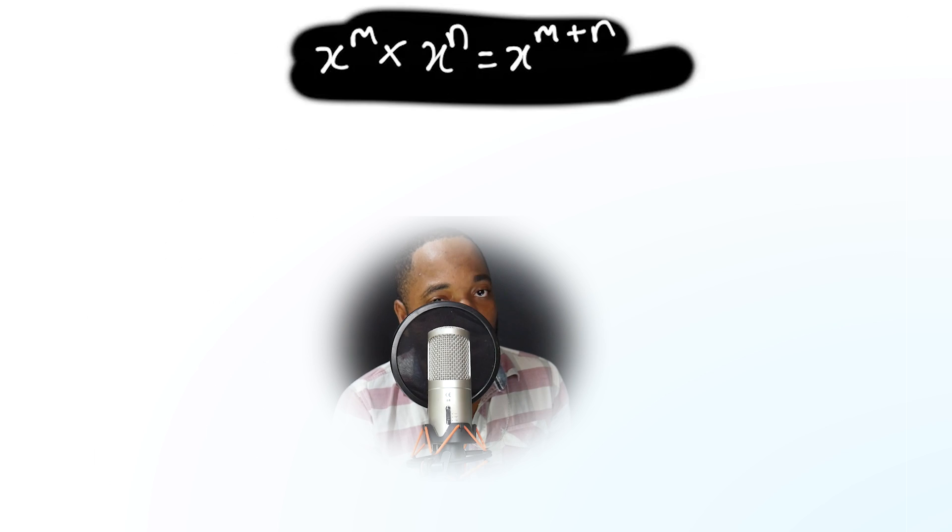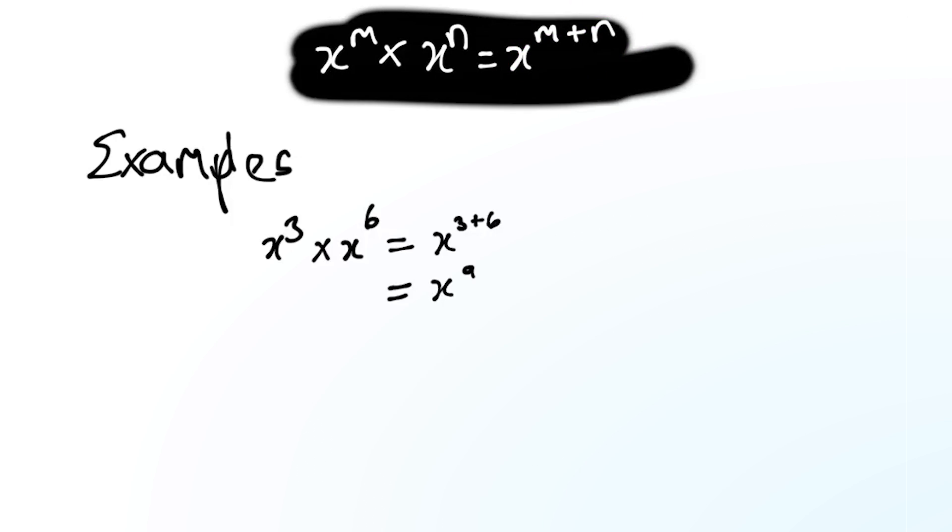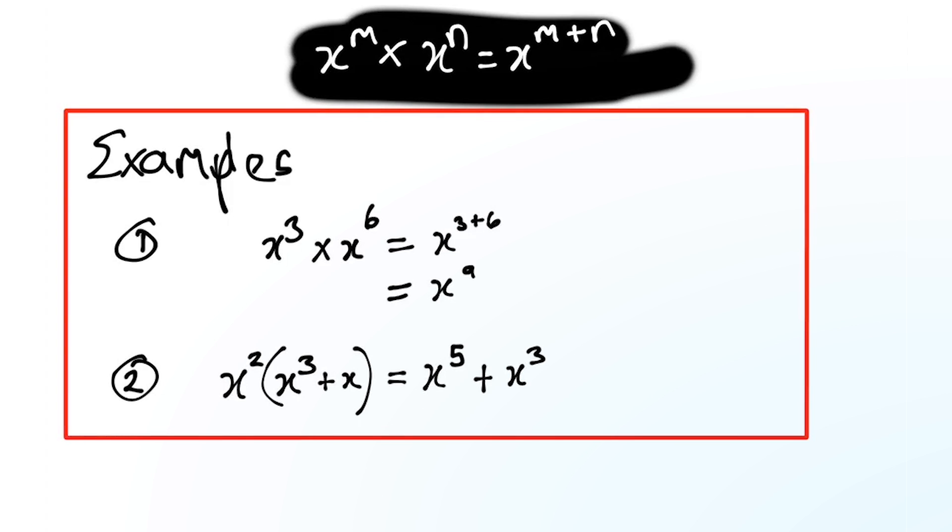Let's go into the main laws. The first law: x to the power of m multiplied, if there's a multiply sign, man, you just add those powers like a boss. Add up those powers there and feel good about yourself. Here's an example: x to the power of 3 times x to the power of 6, we add the 3 and the 6 and we get 9. Simple, let's move on.